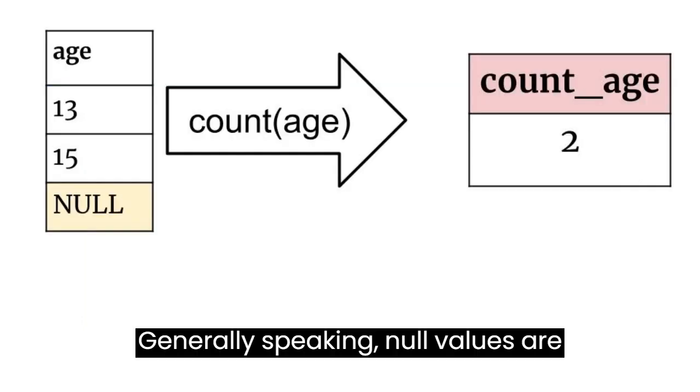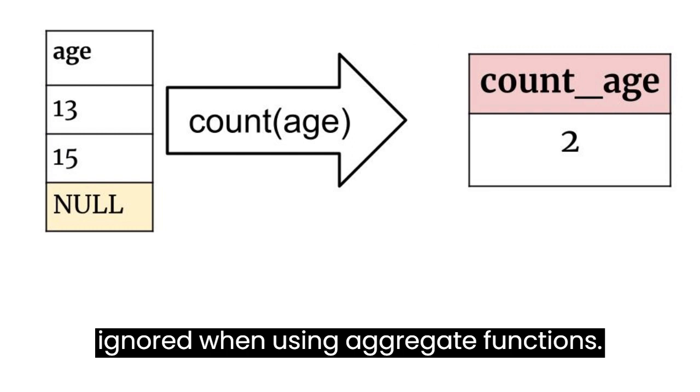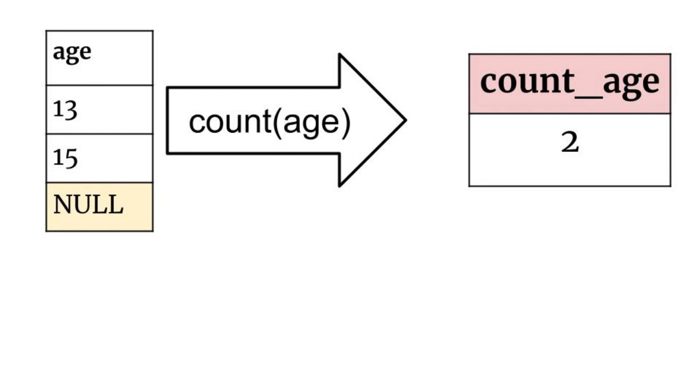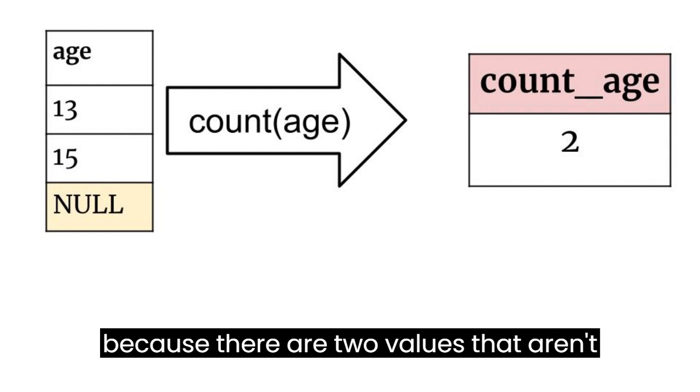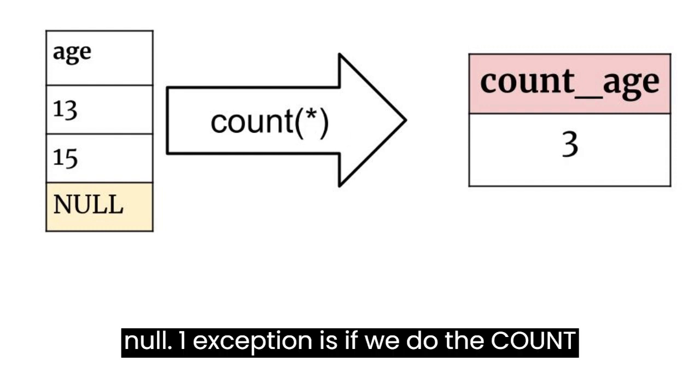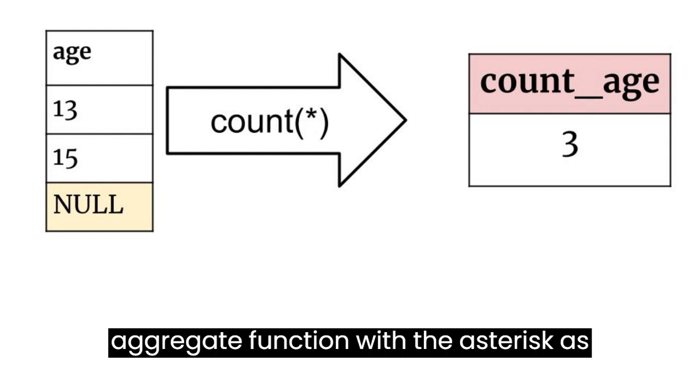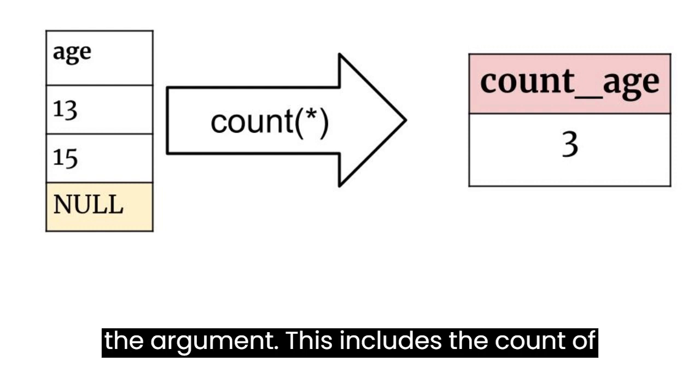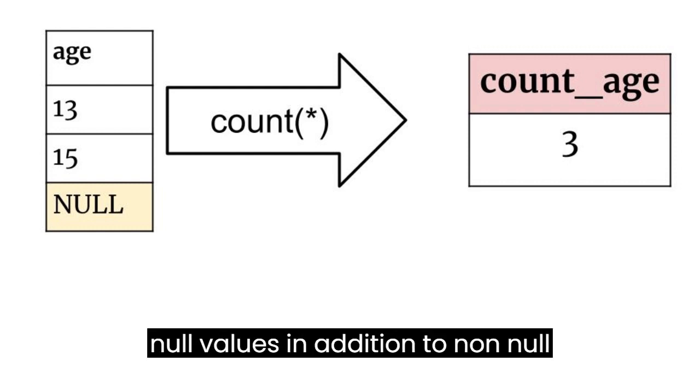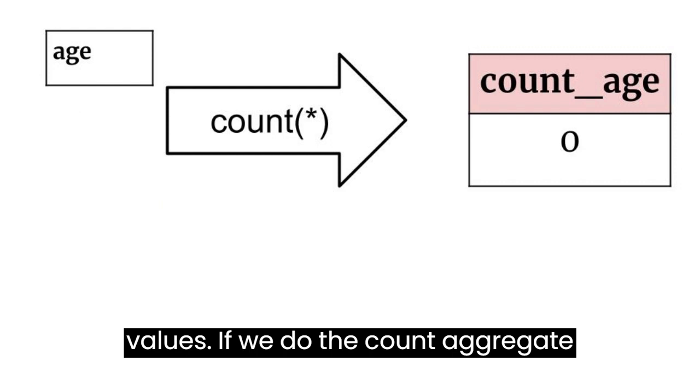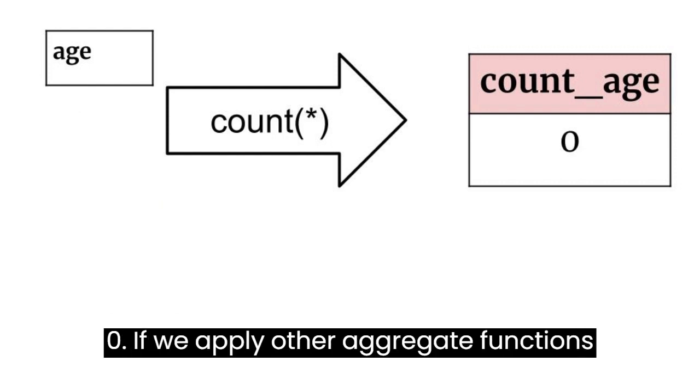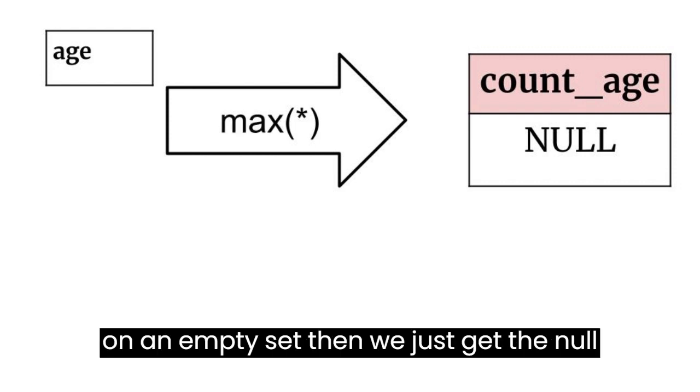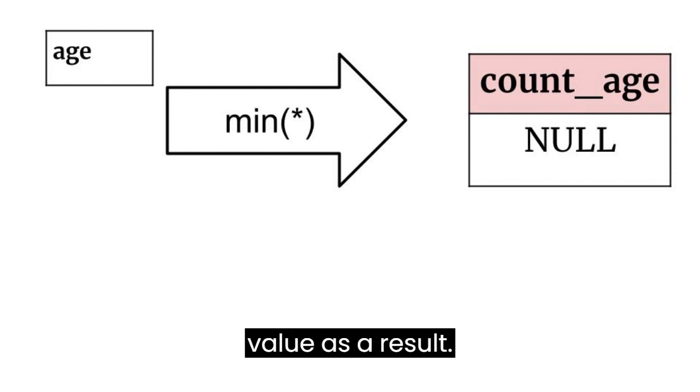Generally speaking, null values are ignored when using aggregate functions. If we run count on this table, we get two because there are two values that aren't null. One exception is if we do the count aggregate function with the asterisk as the argument. This includes the count of null values in addition to non-null values. If we do the count aggregate functions on an empty set, then we get zero. If we apply other aggregate functions on an empty set, then we just get the null value as a result.